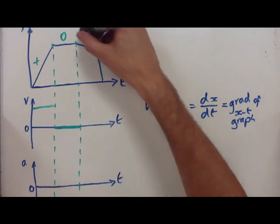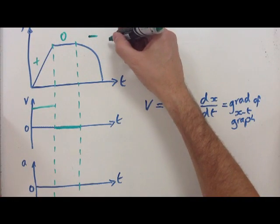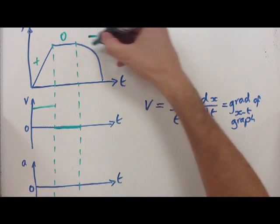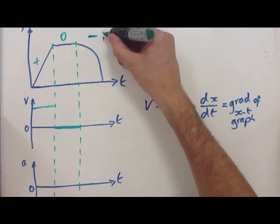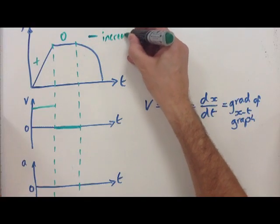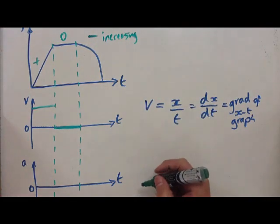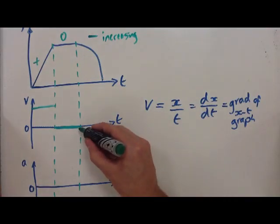What's happening here? Well, first of all, the gradient is sloping downwards so it's negative. It starts off very low and it gets higher, so negative and becoming increasingly negative. So it starts off very low and it gets increasingly negative.